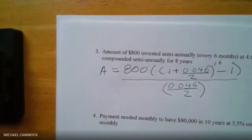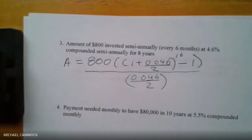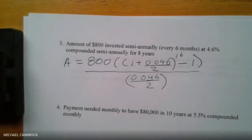Everybody work the top part: 800, two brackets, one plus 0.046 divided by 2, close bracket, to the power of 16 — because it's 8 years twice a year — move over one, minus one, close bracket, press equals. One student gets 351.06. Another gets 5.615 — that looks like a mistake somewhere.